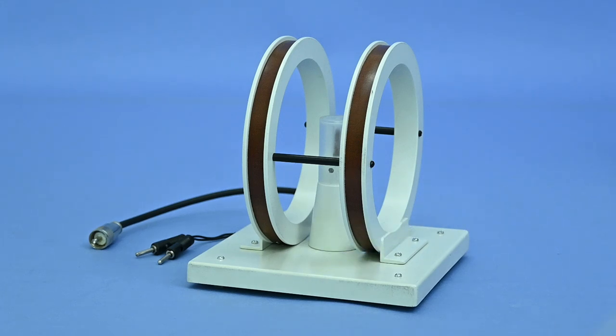The Helmholtz coil consists of two exactly same and parallel coils connected so that the direction of current passing through them is the same. Each coil has 500 turns of copper wire, diameter 15.4 cm, and separation 7.7 cm to each other.